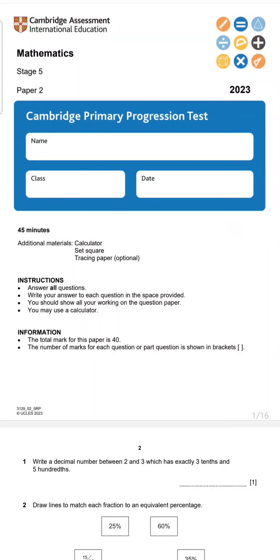Hello, my dears. Today we will write Cambridge Primary Progression Test, Stage 5, Paper 2, year 2023. So before starting your questions, please pay attention to instructions.